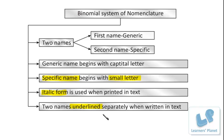These are the basic rules. There are additional points also, but the main rules to be followed for nomenclature according to the binomial system are as we have discussed. Let me give you some examples so you can easily understand how a name is comprised and how it has to be written. We are all human beings, so let me use that as the example. The scientific name of human beings is Homo sapiens.